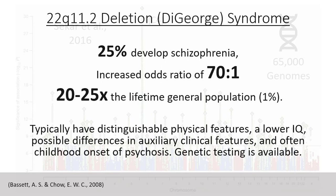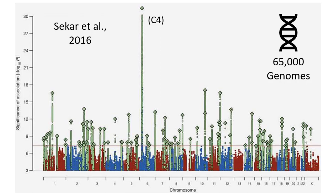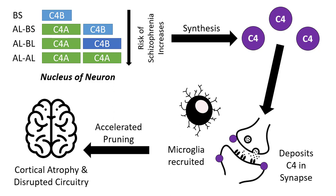Another interesting finding is the elevation in C4 in patients with schizophrenia. In 2016, Sekar and colleagues analyzed 65,000 genomes to find a genetic abnormality linked to schizophrenia. There is an abnormal region on chromosome 6 that codes for C4, found to be consistent among patients with schizophrenia. Variations of the alleles coding for C4 have been stratified based on relative risk of schizophrenia, and the high risk allele results in an upregulation of C4 synthesis.